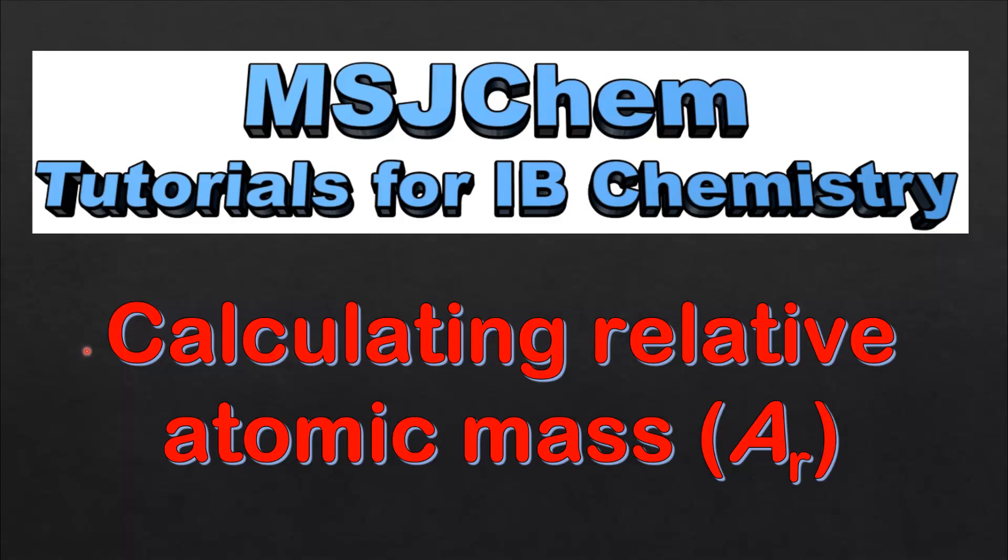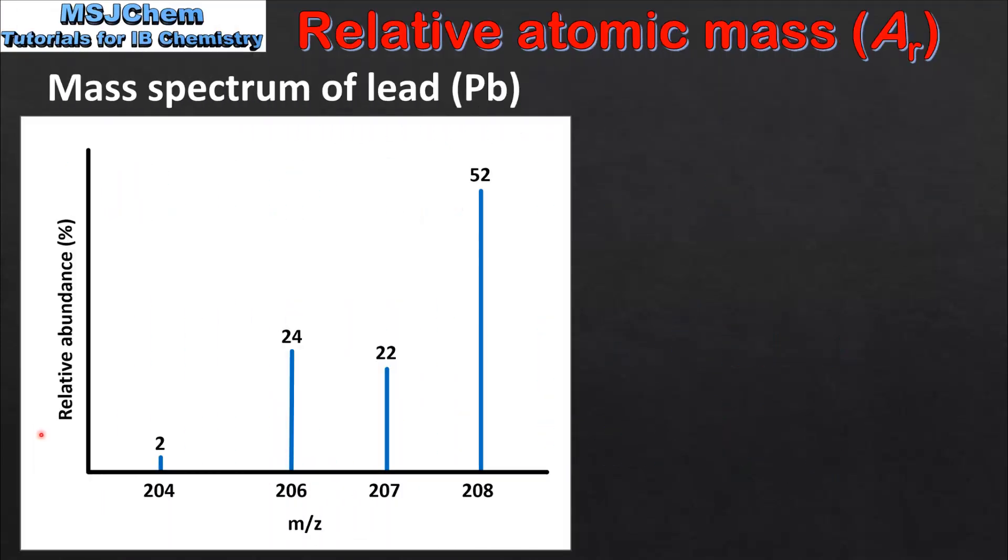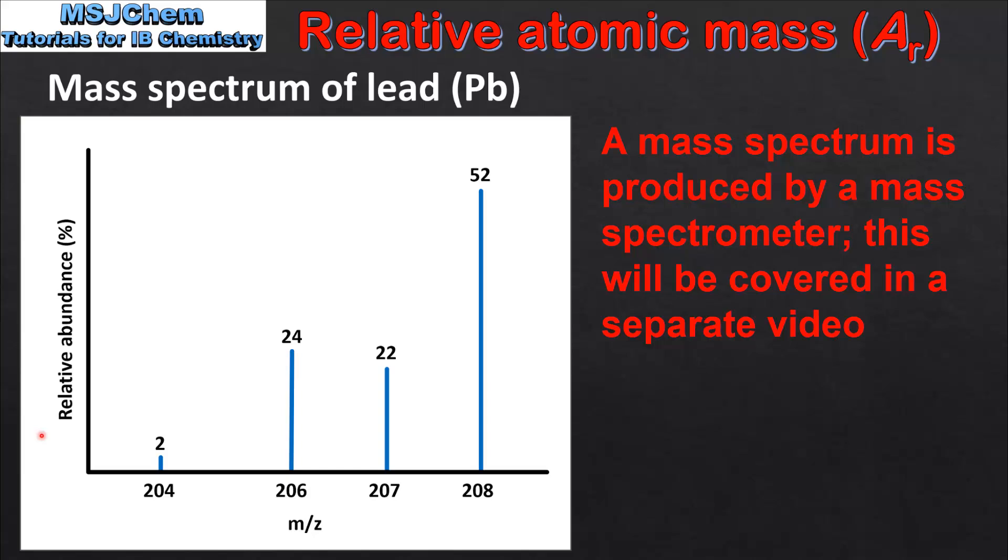This is MSJChem, in this video I will be looking at calculating relative atomic mass. We will start the video by looking at the mass spectrum of lead. A mass spectrum shows mass to charge ratio on the x axis and relative abundance on the y axis.